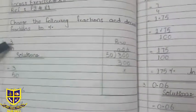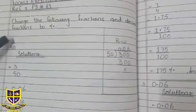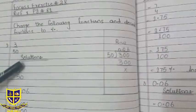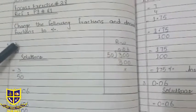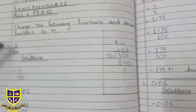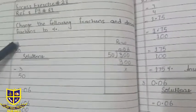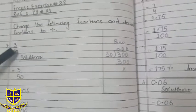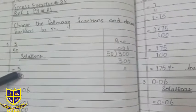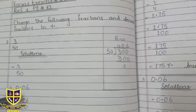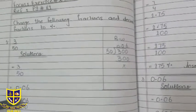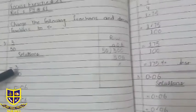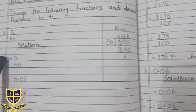First question: we have 3 by 50. When we change a fraction to percentage or decimal fraction, we need 100 in the denominator — 100 is a must. So first we have to convert this to a decimal, then we will have 100 in the denominator. So we write 3 by 50 here.